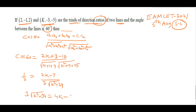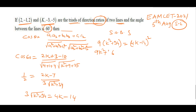Squaring both sides: 9(k²+34) = (4k−14)². Expanding: 9k² + 306 = 16k² − 112k + 196. Rearranging: 16k² − 9k² − 112k + 196 − 306 = 0, giving 7k² − 112k − 110 = 0.